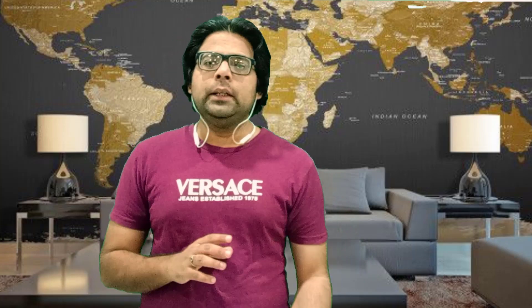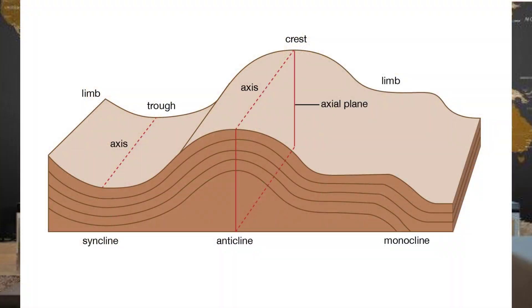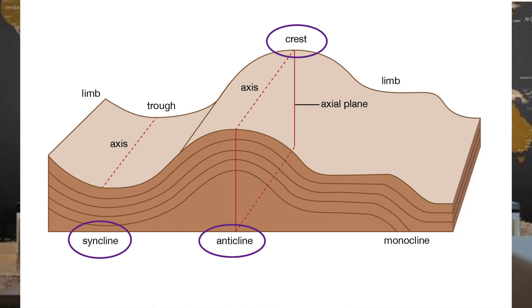In the endogenic forces, we need to be aware of some important terminologies. One is upfold and the other is downfold. The imaginary line which joins the highest points along the upfold is called the crest line. The upper side of the fold is known as the upfold or anticline, while the lower portion is known as the downfold or syncline. The central point from where rock strata dip away in opposite directions is called the axis of the fold.